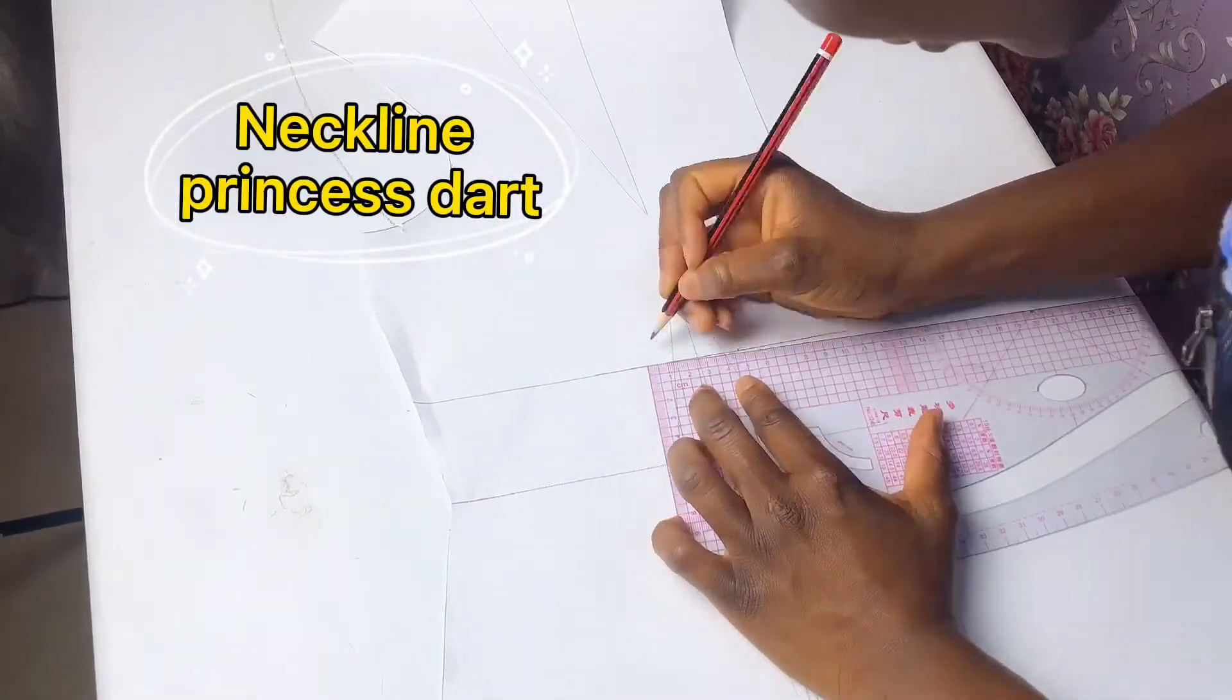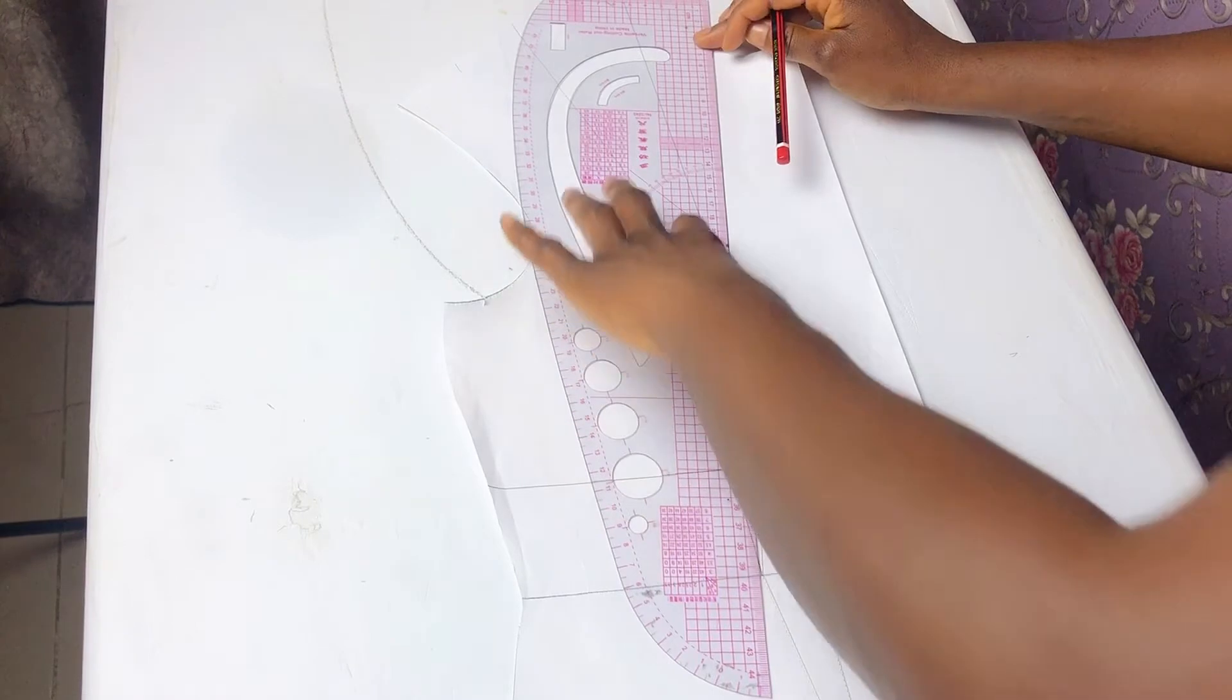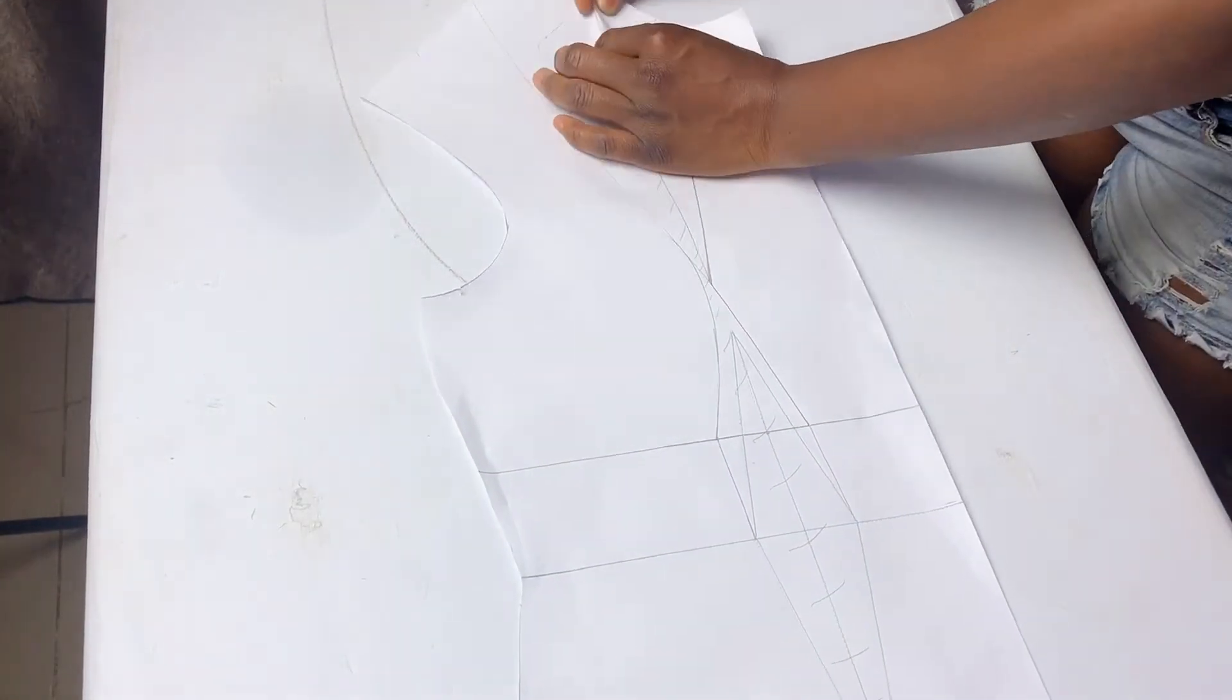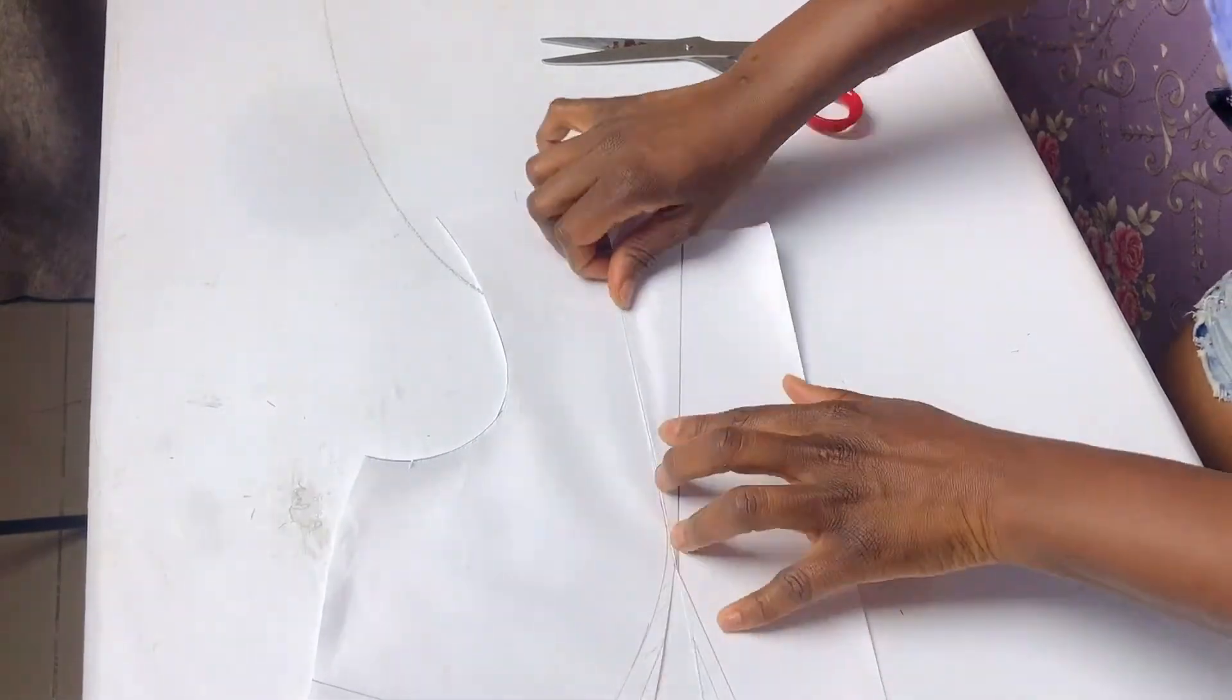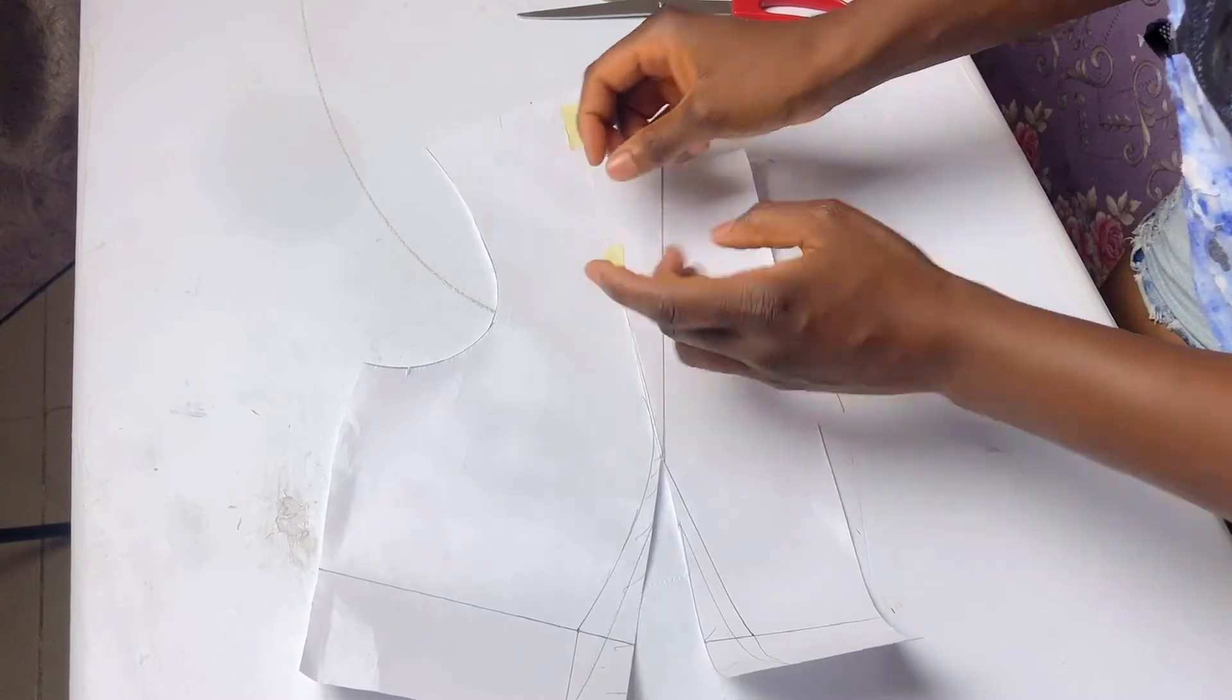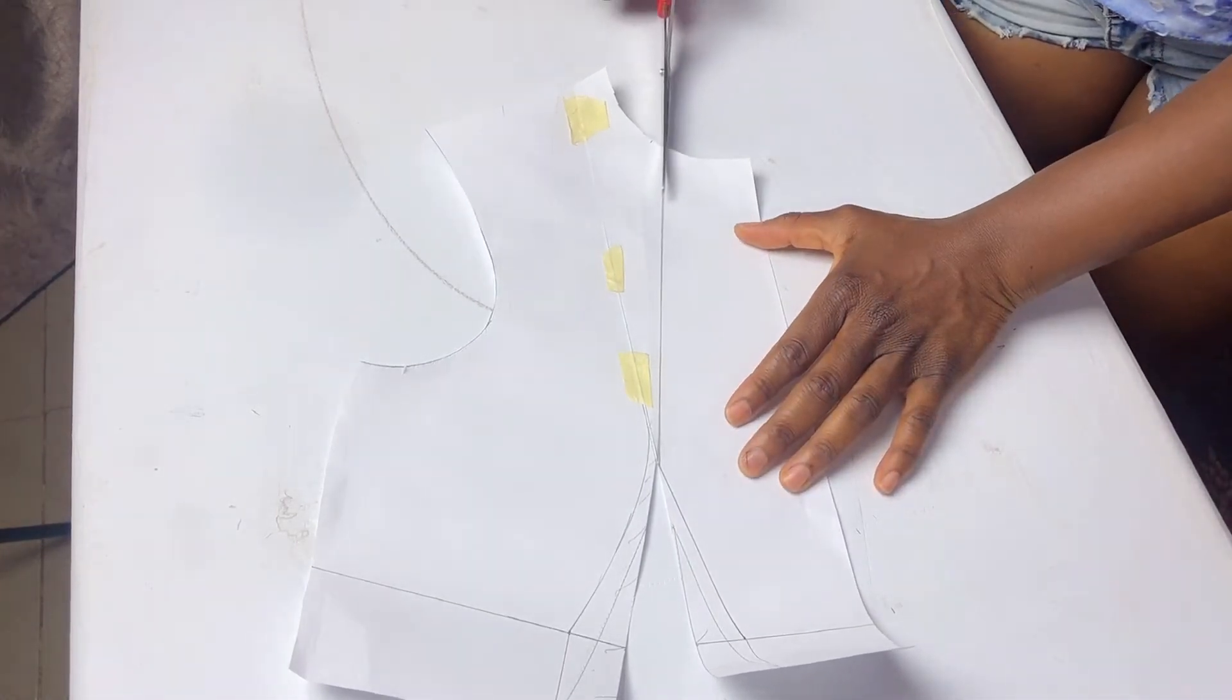Moving on to the neckline princess dart seam, you of course still start with your underbust tightening. Always remember to tighten your underbust. Mark the middle of your neckline and connect to your bust point. Also rule down, also connect your underbust tightening like we've been doing all along.